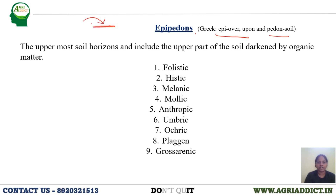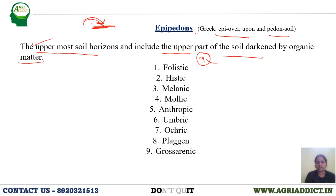We can define epipedons as the uppermost soil horizons, and also the upper part of the soil darkened by organic matter. Usually there are nine epipedons, of which three are important in India: mollic, ocric, and umbric. One thing we should remember while learning these epipedons and endopedons is that we should always learn them comparatively.